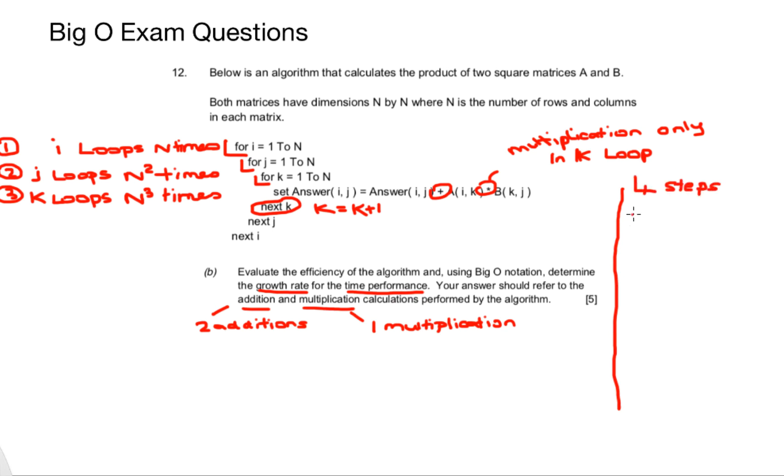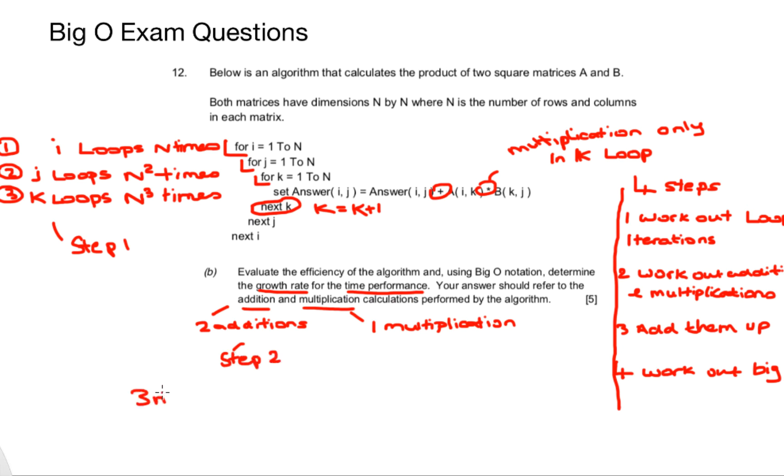Now I have four very distinct steps for dealing with questions like this. The first one is I will work out the loop iterations like I've done on the left hand side. The second is I will work out the multiplication and the additions because that's what it asks for in the question. And number three, I add them up together and I work out the Big O notation. So once I've added these values together, I have 3N cubed, that's addition and multiplications. I have one addition from the J loop where I increment J. So that gives me N squared and I have one addition incrementing I and that gives me N. So adding that all together, I've got 3N³ + N² + N.